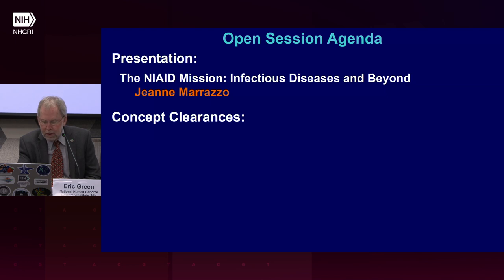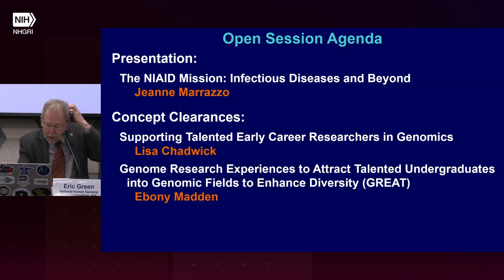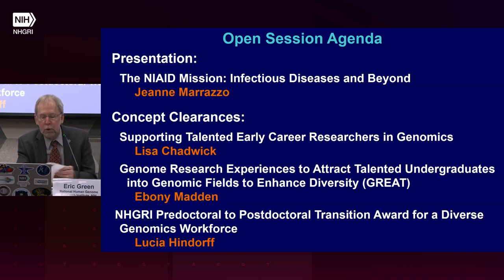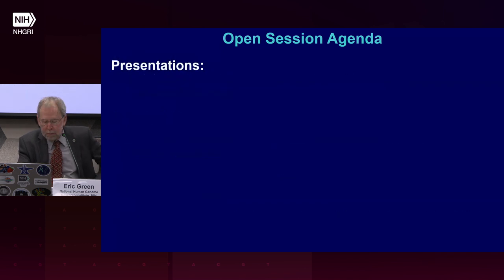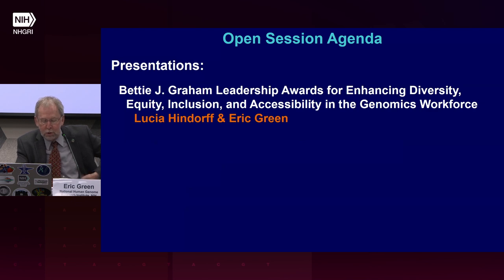First, Lisa Chadwick will present a concept clearance on supporting talented early career researchers in genomics. Then Ebony Madden will present on genome research experiences to attract talented undergraduates into genomic fields to enhance diversity — abbreviated GREAT. Finally, Lucia Hindorff will present on the NHGRI pre-doctoral to postdoctoral transition award for a diverse genomics workforce. Following the concept clearances, Lucia Hindorff will return to join me as we present the Betty J. Graham Leadership Awards for Enhancing Diversity, Equity, Inclusion, and Accessibility in the Genomics Workforce.